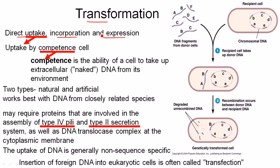Transformation is the direct uptake process from outside the bacterial cell. When the bacteria uptakes external DNA, that DNA incorporates into the bacterial chromosome. If there is a gene inside that fragmented DNA that comes from outside, then that gene actually expresses inside the bacteria. This type of uptake only happens when the bacterial cell is a competent cell.